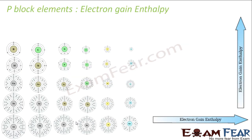Now let's talk about electron gain enthalpy. It's just the reverse of ionization enthalpy. In this case, it is the energy that will be liberated when an electron comes and joins the atom.